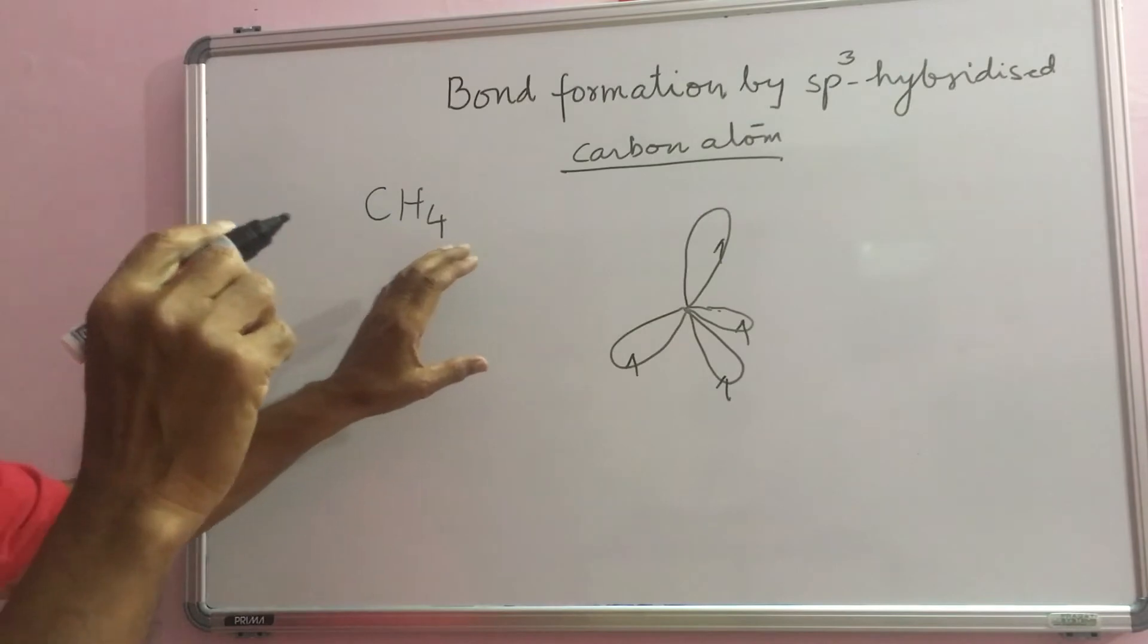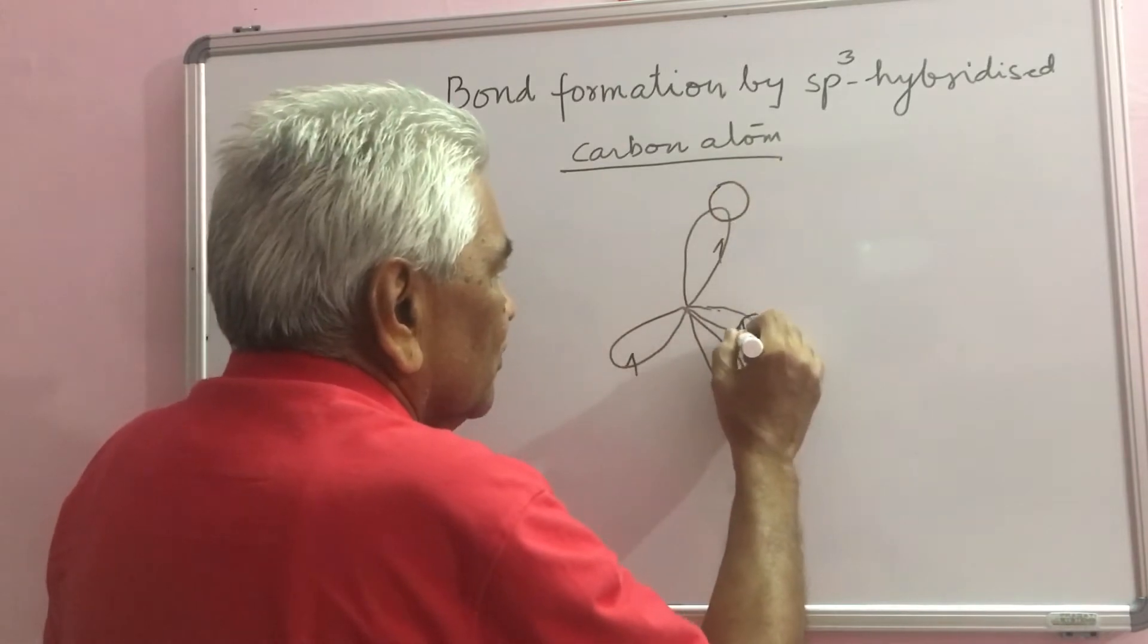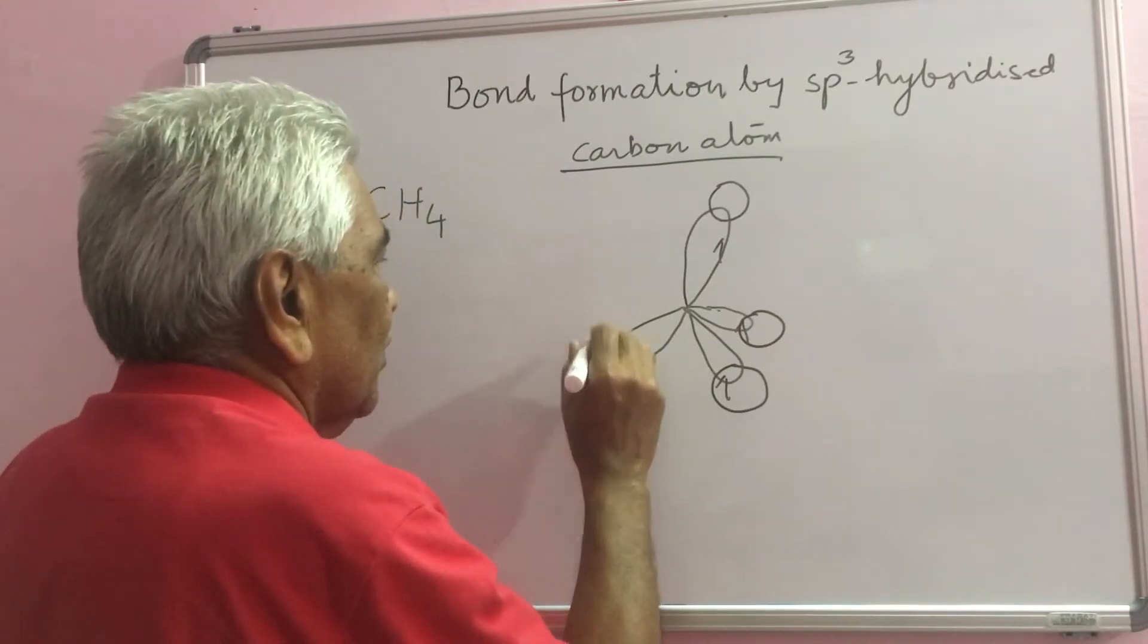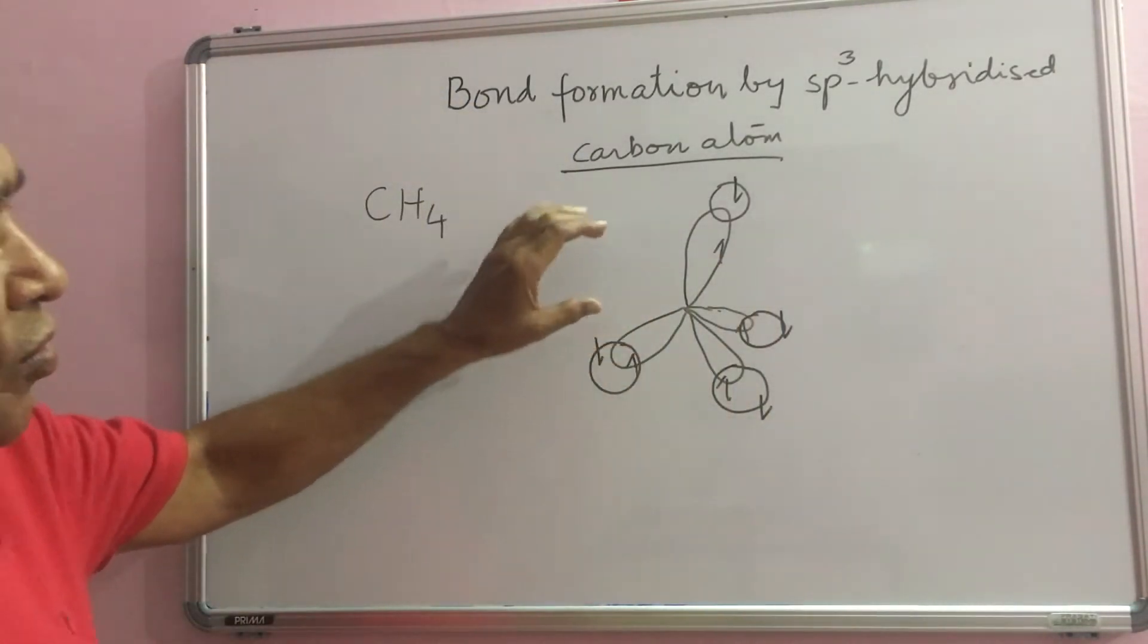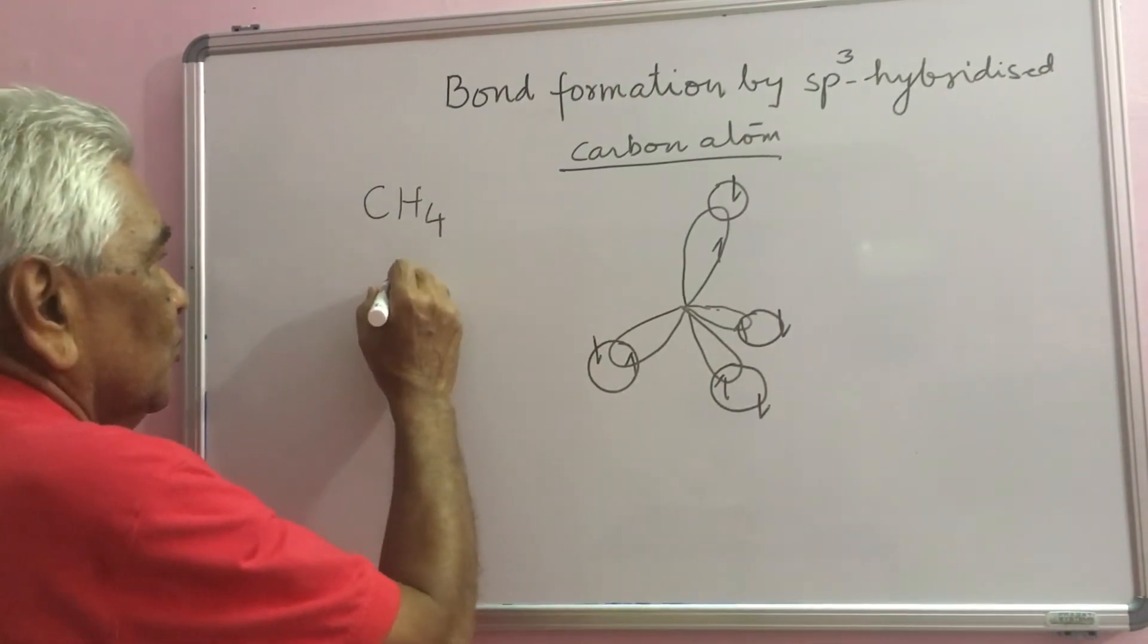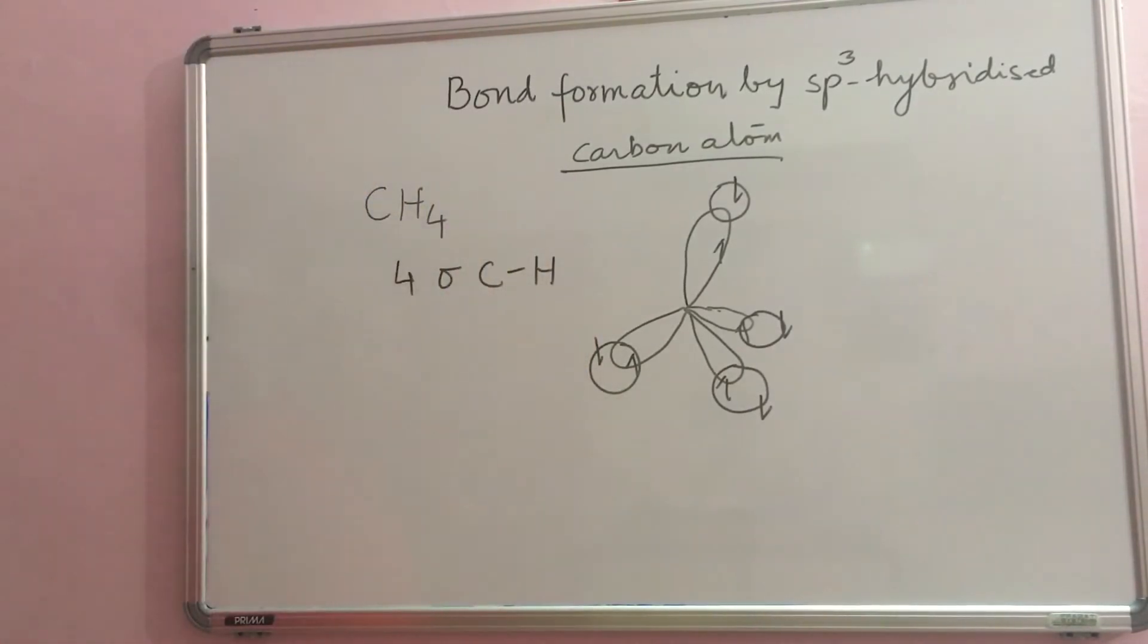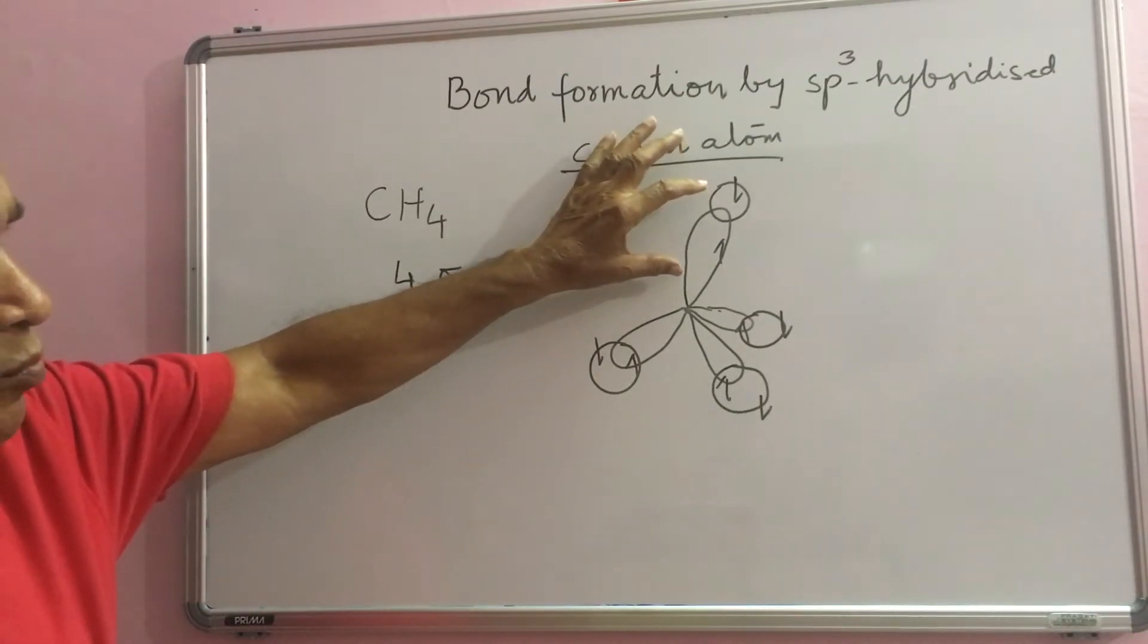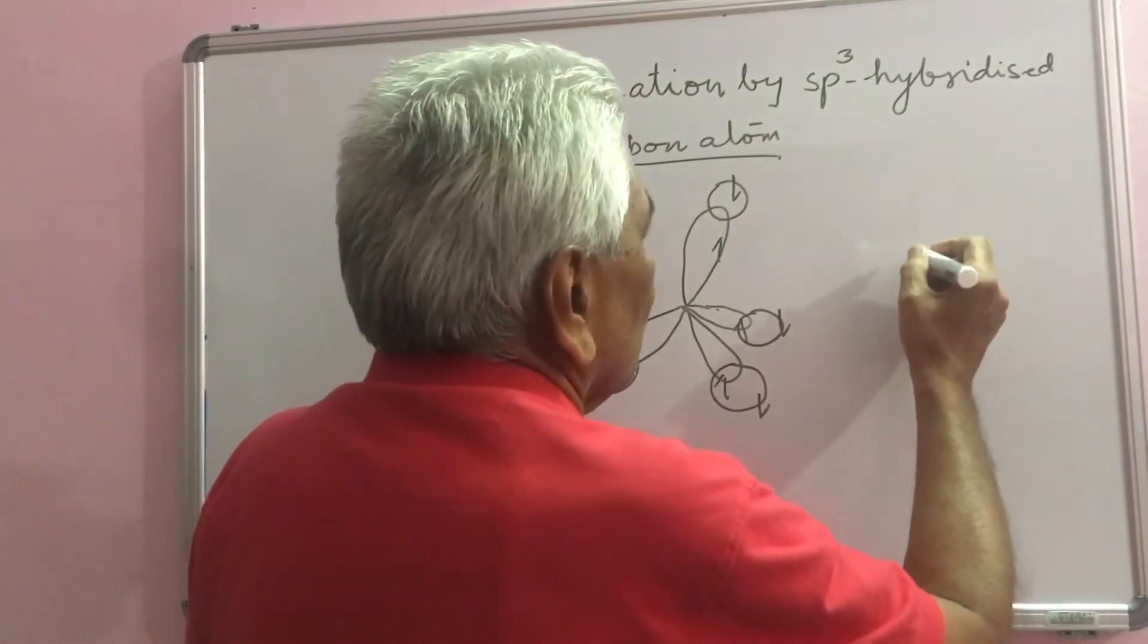It will combine with 4 hydrogen atoms by sp3-s overlap, forming 4 sigma C-H bonds. The distance between carbon and hydrogen, known as bond length, is 1.09 angstrom units.